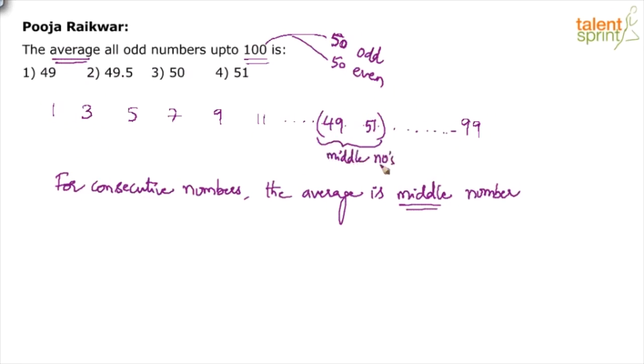And what happens when there is no unique middle number? We have to take the average of these two middle numbers. So 49 plus 51 divided by 2, which is 50. What comes between 49 and 51? It is 50. So your answer to this question is Option 3, 50.